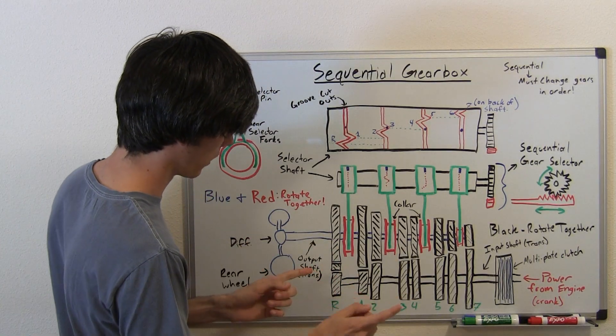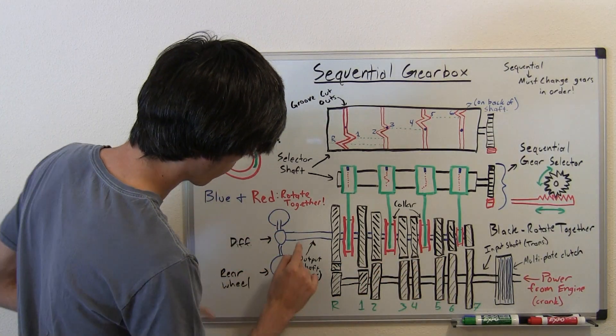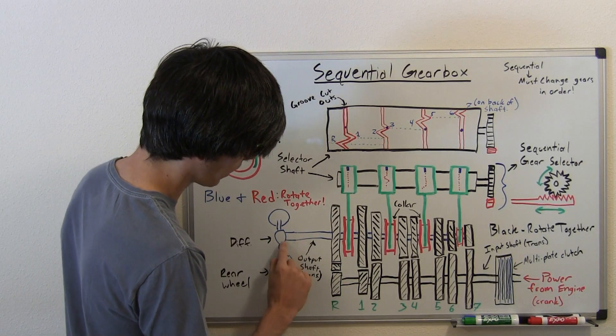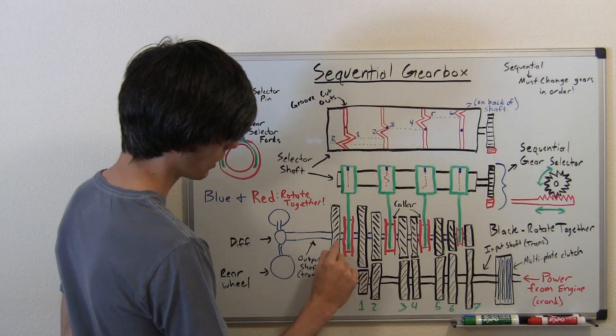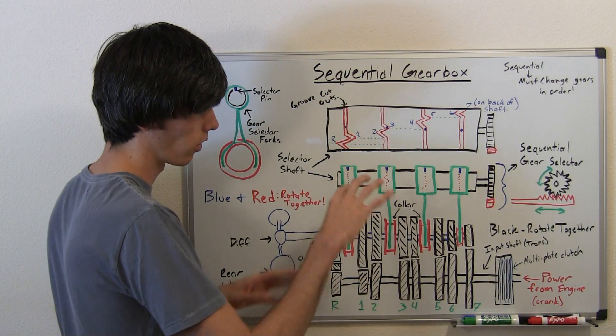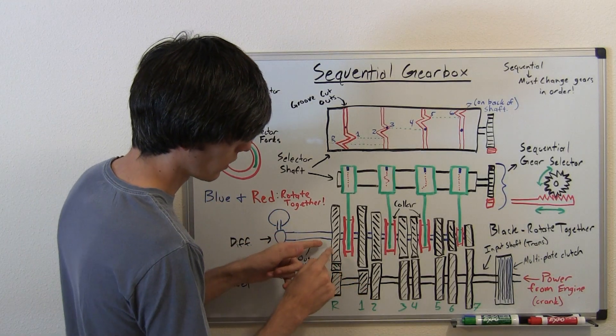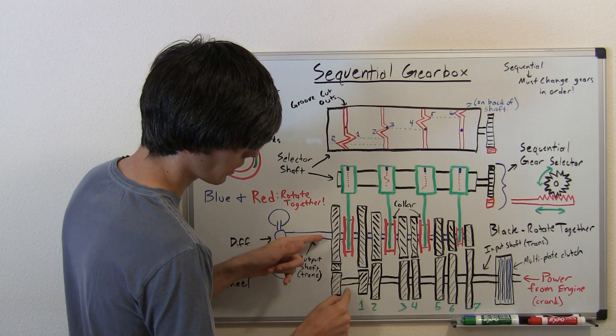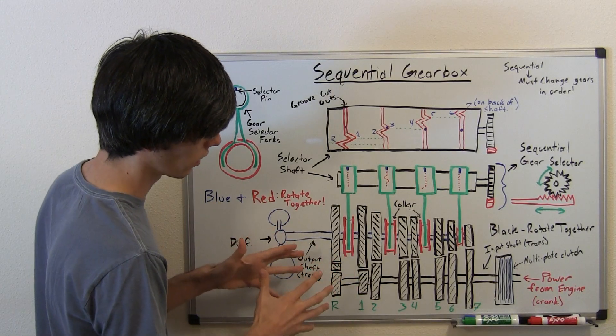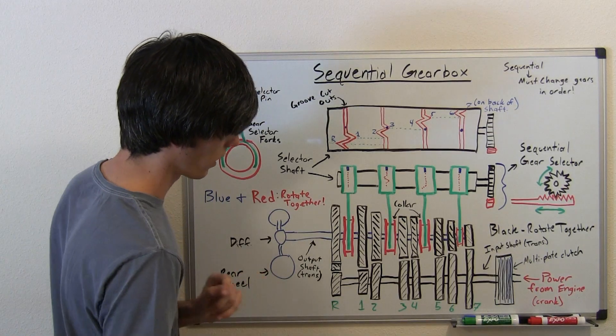If you see something red, these collars, these four collars which are red, or blue - we've got the differential, the rear wheels, as well as the output shaft of the transmission. So the red and the blue, these collars and this output shaft, they're all rotating together at all times. What the difference is, is the blue shaft and the black shaft can be rotating at different speeds. When the engine and transmission are not linked together via these collars, then the wheels can spin at one speed while the engine spins at another.